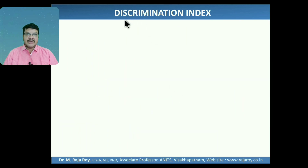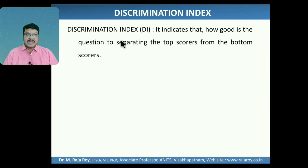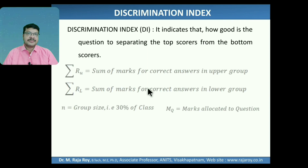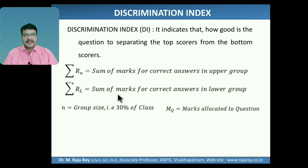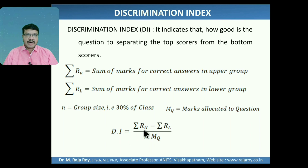The next parameter is discrimination index. Discrimination index is used to indicate how good the question is to separate the top scorers from the bottom scorers — that means, the quality of the question. The parameters Sigma RU, Sigma RL, and N are just like in the facilitation value; only the formula changes. Discrimination index Di equal to Sigma RU minus Sigma RL divided by N into MQ.